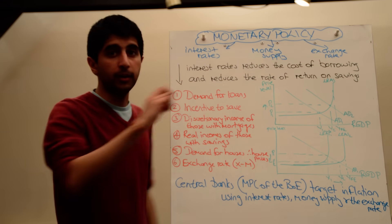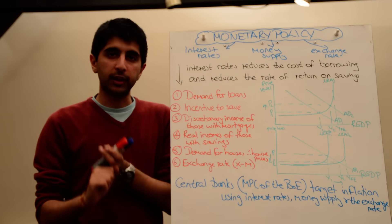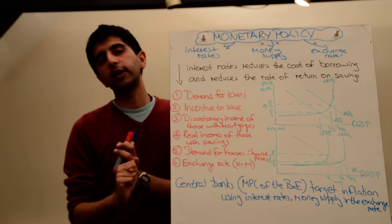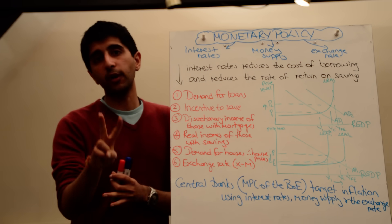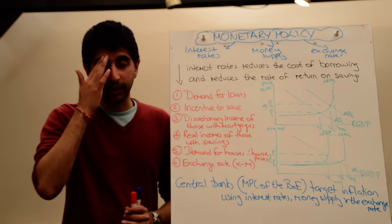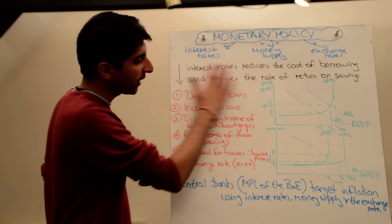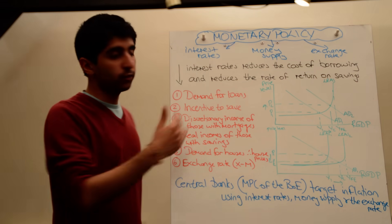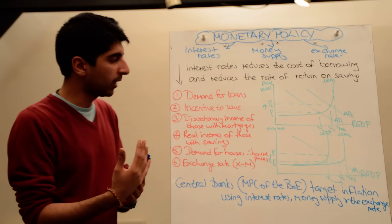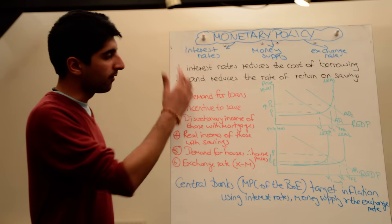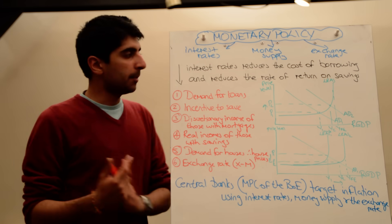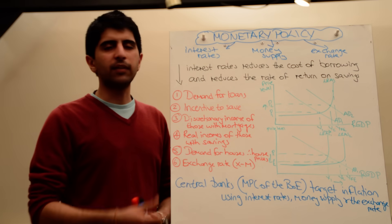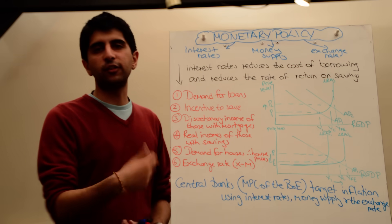When interest rates fall, two things happen — there is a double-edged coin when it comes to interest rates. They affect the cost of borrowing, but they also affect the rate of return on saving. You must mention both of those in your exam to score fully. A reduction in interest rates will increase the demand for loans because it's now cheaper to borrow money. It will also reduce the incentive to save, because the rate of return on saving reduces — people think, why save if I'm not going to get much interest? I'd rather just spend it instead.